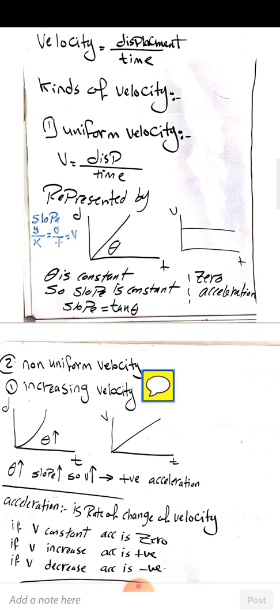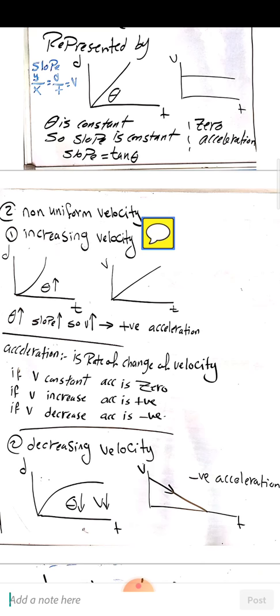In the velocity-time graph for uniform velocity, the angle between the line and the x-axis is zero, which means zero acceleration.